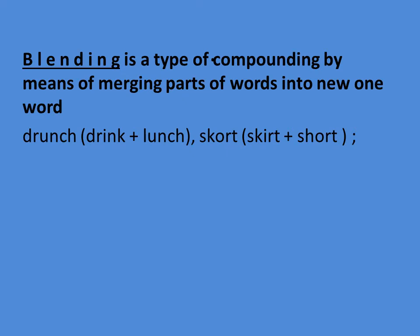The next type of shortening is blending. Blending is a type of compounding by means of merging parts of words into a new word. For example, brunch consists of two words: breakfast and lunch. Similarly, from a previous lecture, there was the example of the meal taken between breakfast and lunch — that is brunch. These two words merge and blend together.